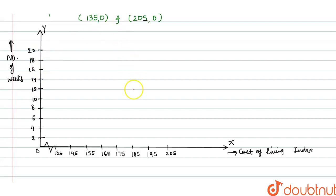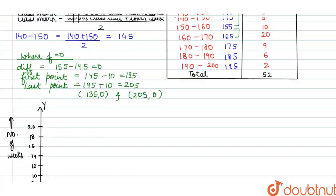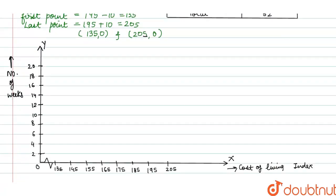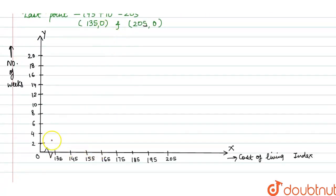Now we have to plot the graph. First point from the table: starting from (135, 0). When x is 145, frequency is 5, so this point. Next is (155, 10), this point. Next is (165, 20), this one. Next is (175, 9), so 9 means between 8 and 10, this point.